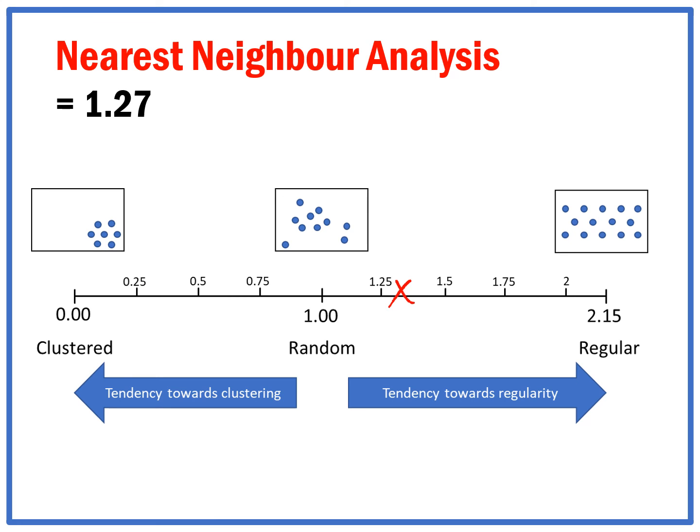The result came out at 1.27, and so along my continuum, 1.27 is marked by that red cross. What that implies is that my data has a tendency towards a random distribution, meaning this has been done naturally. The planting of these trees has been done naturally.